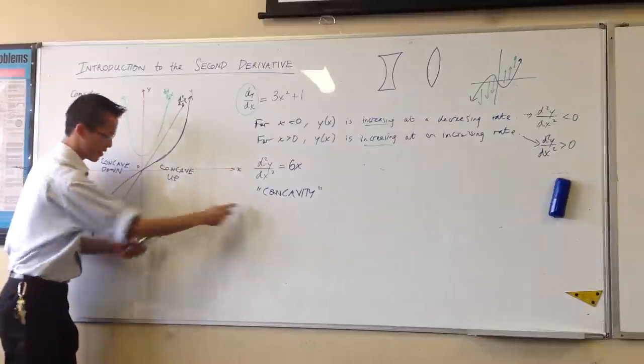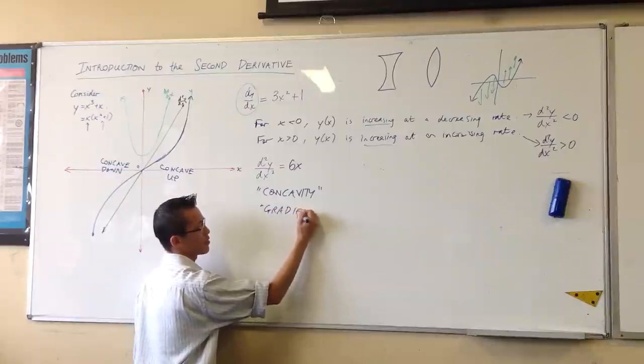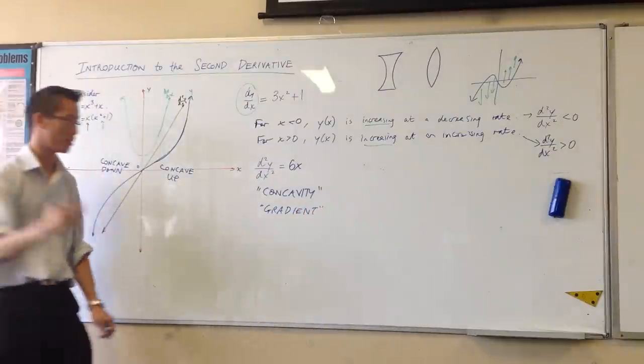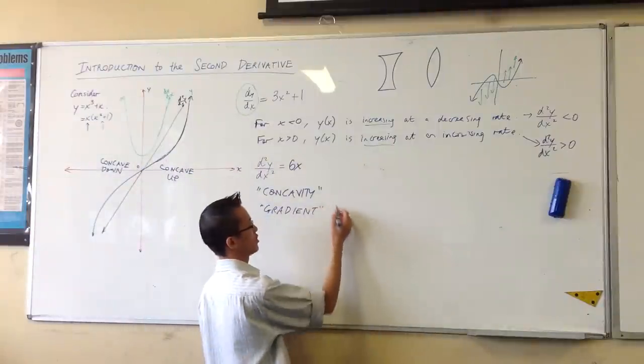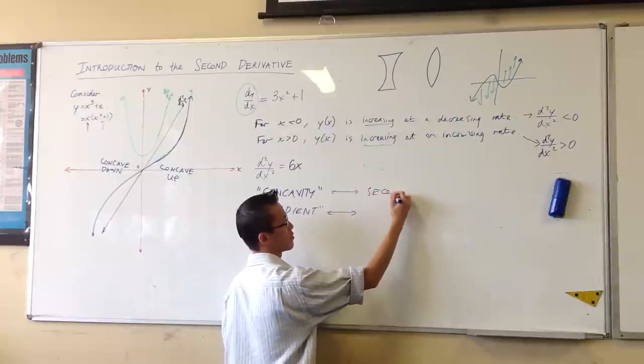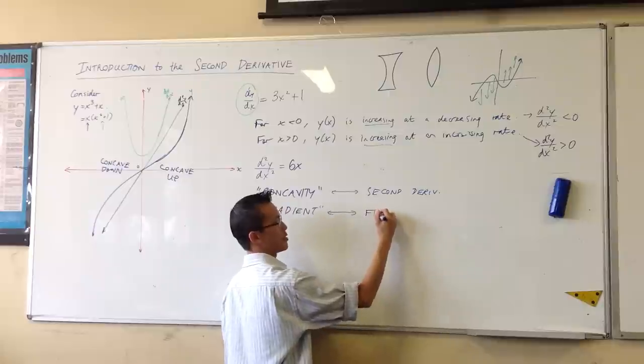So, concavity and gradient. These are the two geometric ideas that correspond to our first derivative and our second derivative. So, I actually put them in inverse order. This is the second derivative. And this is the first.